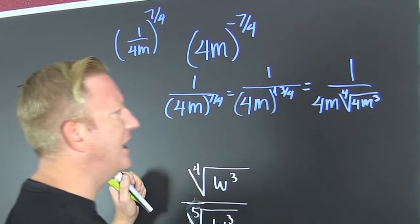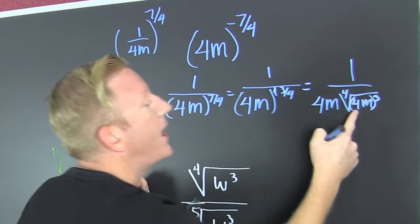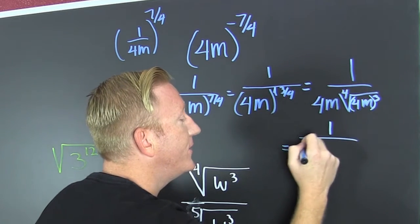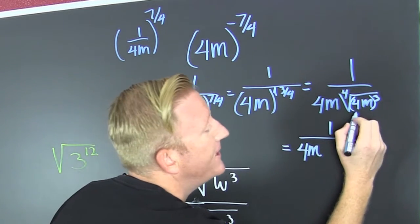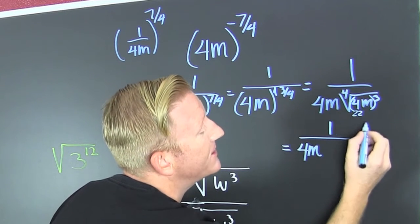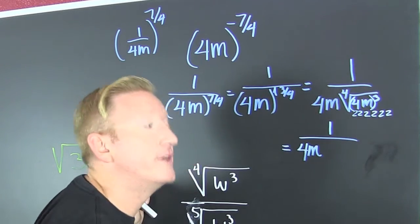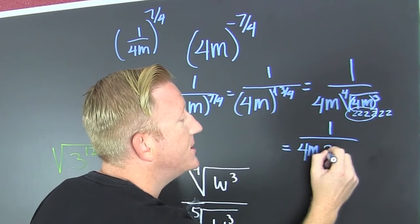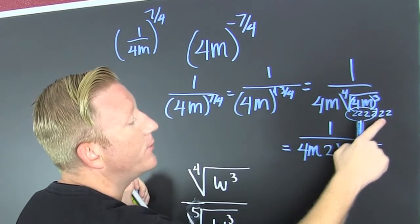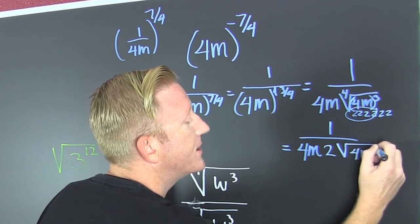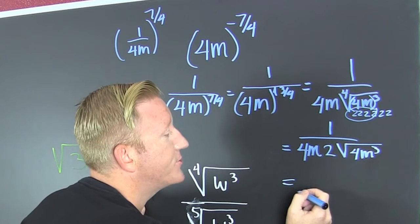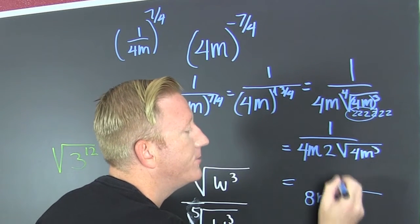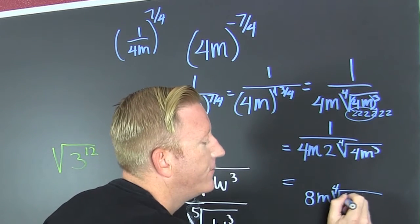And that simplifies even more — because there are twos in there. I really should have worked this example ahead of time. In 4m there's a 2 and a 2, and with that cubed there are more copies. For every 4, one gets to come out — so a 2 comes out — and I still have the square root of 2 times 2, which is 4m to the third. So this is 8m times the fourth root of 4m to the third in the denominator.